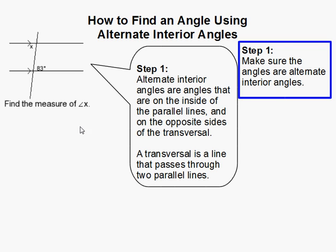You know angles are alternate interior angles if both angles are on the inside of the two parallel lines. So this angle and this angle are both on the inside of the parallel lines.